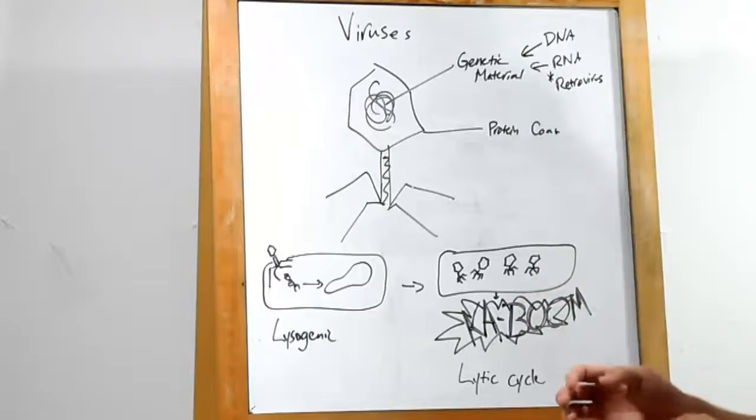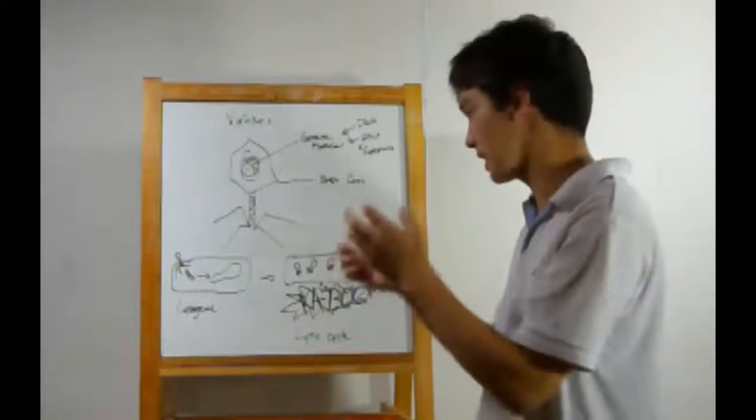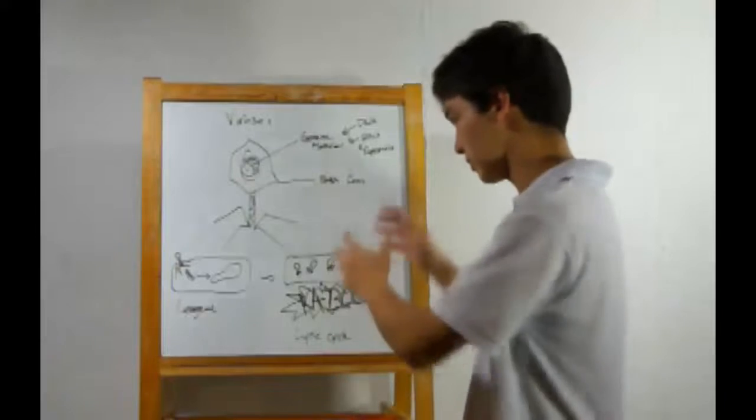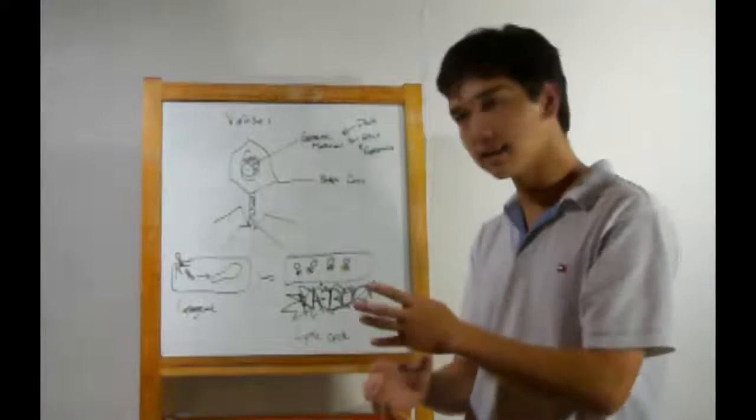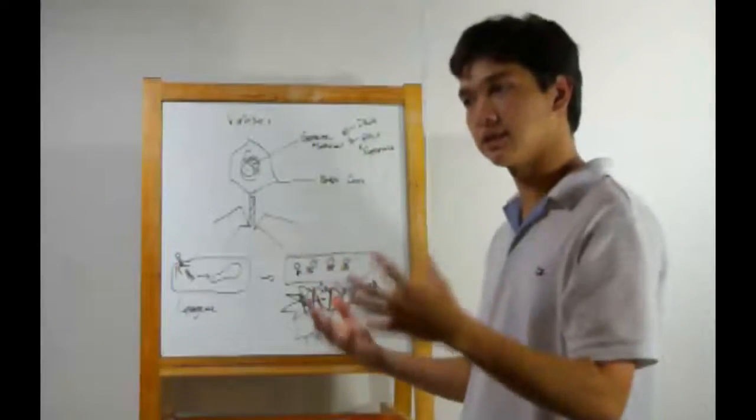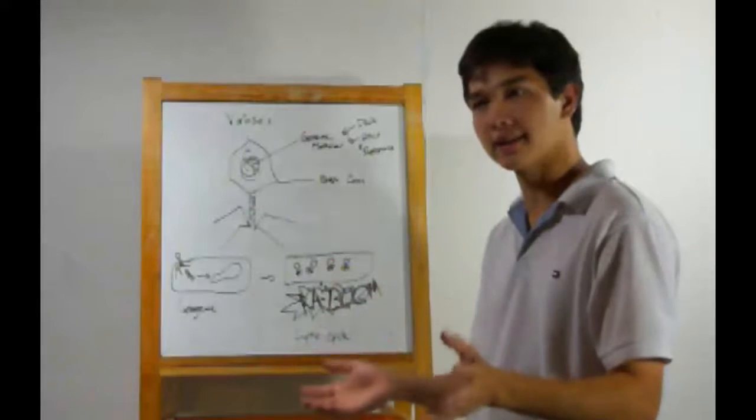In the lytic cycle, the virus will release its DNA, which will take over the cell and cause it to produce thousands upon thousands of copies of this original virus, all filled with the same genetic material, until the cell gets filled and bursts. Kaboom! Releasing thousands of viruses into the surroundings.